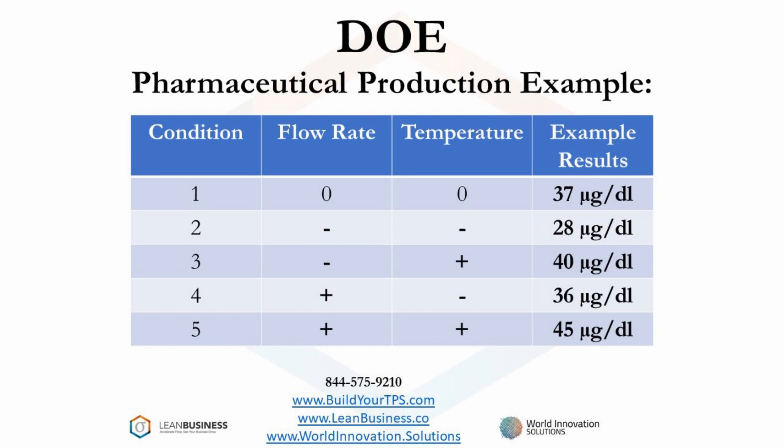Let's discuss the results. The two negative factor experiments showed a significant decrease from normal. The factor permutations with pluses and minuses showed some hope with a low flow rate and a high temperature. However, the best result came from increasing flow rate, the increase in temperature, and the interaction between the two. It is difficult to predict interactions.